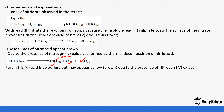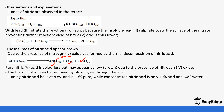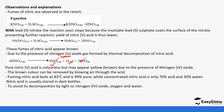Pure nitric acid (HNO₃) is colorless but may appear yellow due to the presence of nitrogen dioxide, and that color can be removed by blowing air through the acid. Fuming nitric acid boils at 83°C and is 99% pure, while concentrated nitric acid is only 70% pure. It is stored in dark bottles because exposure to light causes it to decompose into nitrogen dioxide, oxygen, and water.